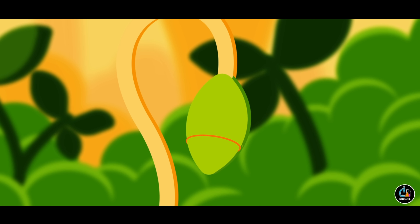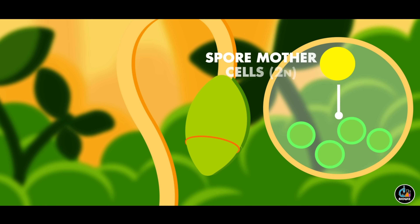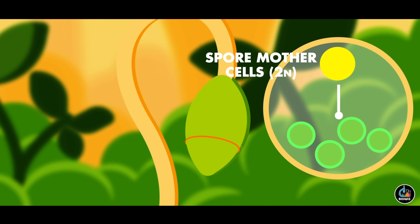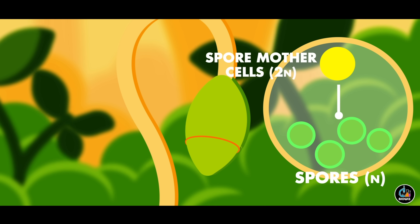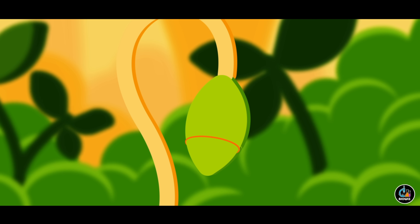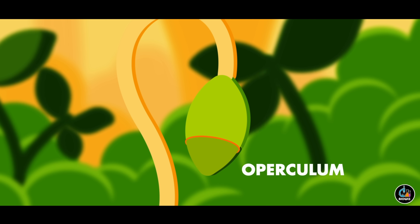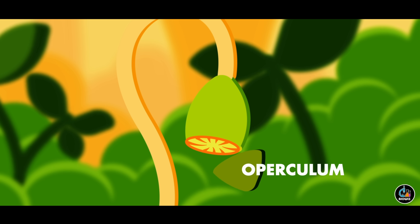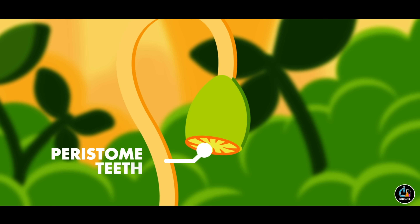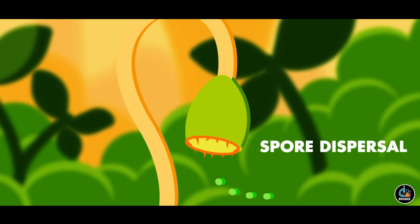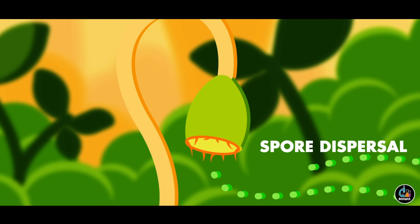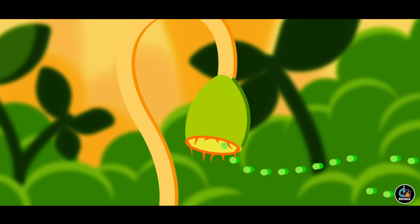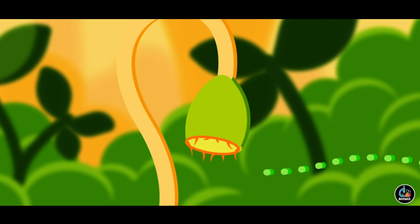The capsule of the sporophyte contains numerous diploid spore mother cells. These cells divide by meiosis to produce haploid spores. When spore formation is complete, the tip of the capsule called the operculum ruptures and exposes tooth-like structures called peristome teeth, which are responsible for dispersal of spores due to their hygroscopic nature. These spores are now released and the life cycle continues.